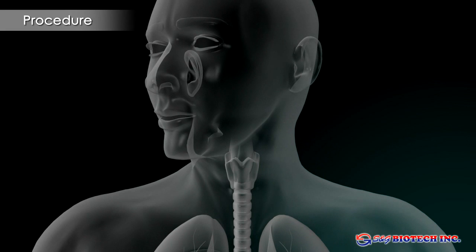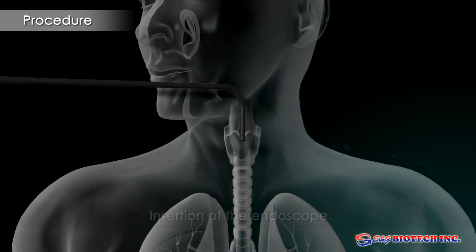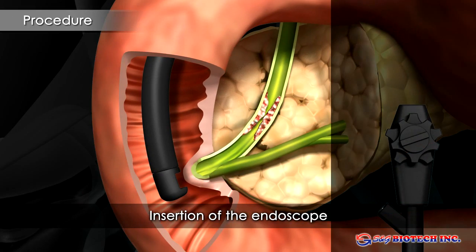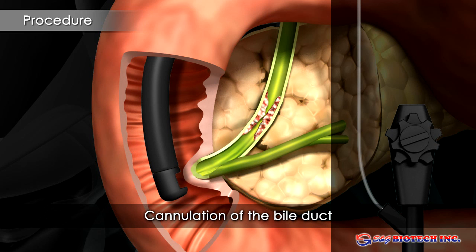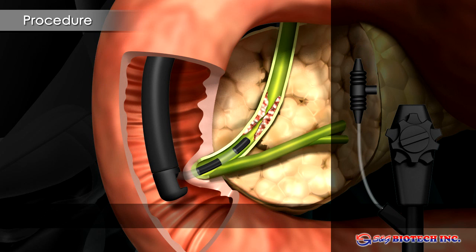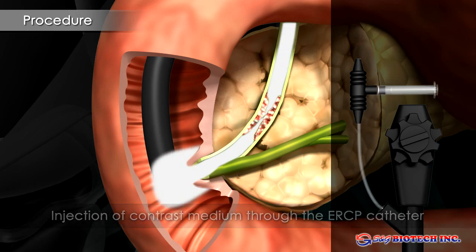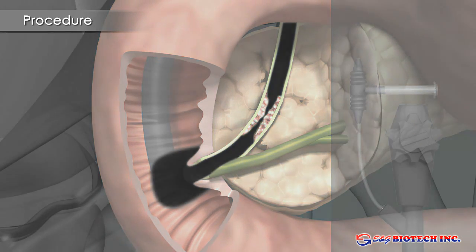The endoscope is passed into the duodenum and the major papilla visualized. An ERCP catheter is inserted through the endoscope and the papilla cannulated. A contrast medium is injected to demonstrate the position and length of the stricture.